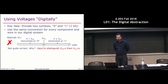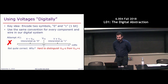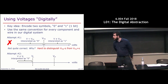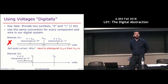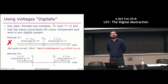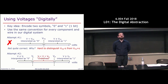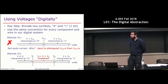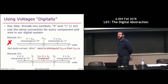Instead of having a single threshold, we're going to have two thresholds: VL and VH. Everything lower than VL we interpret as a digital zero. Everything higher than VH we interpret as a digital one. The zone in the middle is undefined — not a valid digital value — and if you give me a voltage in the middle, I am allowed to do anything with it.